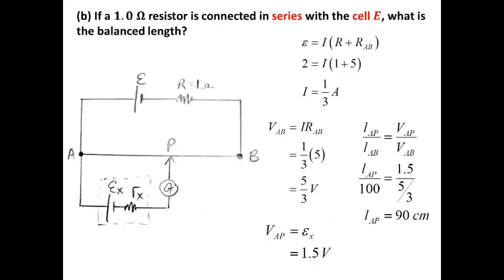Now, if you connect a 1-ohm resistor in series with the cell E, what is the new balance length AP? If you have the external resistor, we apply Ohm's law. There is current at the top position — current is provided by the big battery.